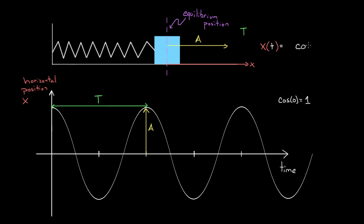Just cosine alone isn't going to work, because cosine only gets as big as one, but this function has to get as big as the amplitude a. For example, if we pulled the mass back 0.2 meters, our amplitude is 0.2 meters — this doesn't even reach one. So we multiply the front of the function by the amplitude, because then one times amplitude means x only gets as big as the amplitude, which is exactly what we want.